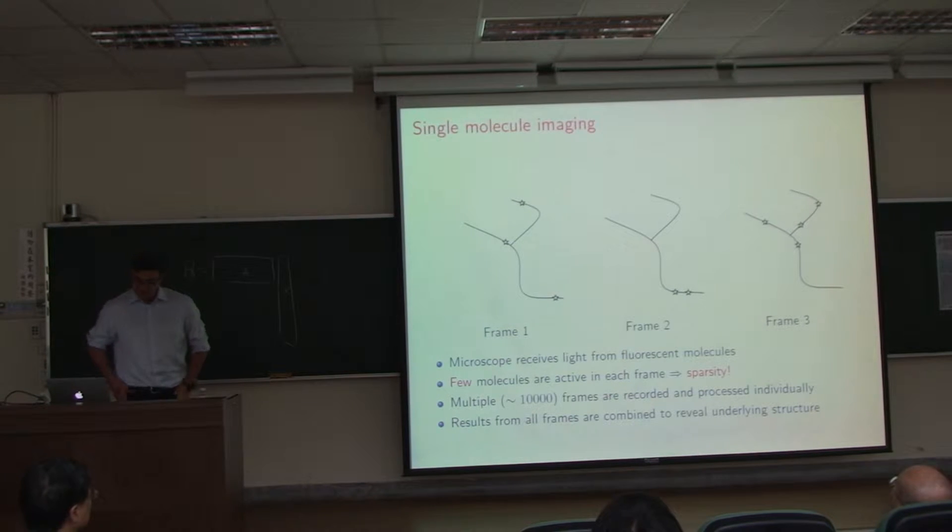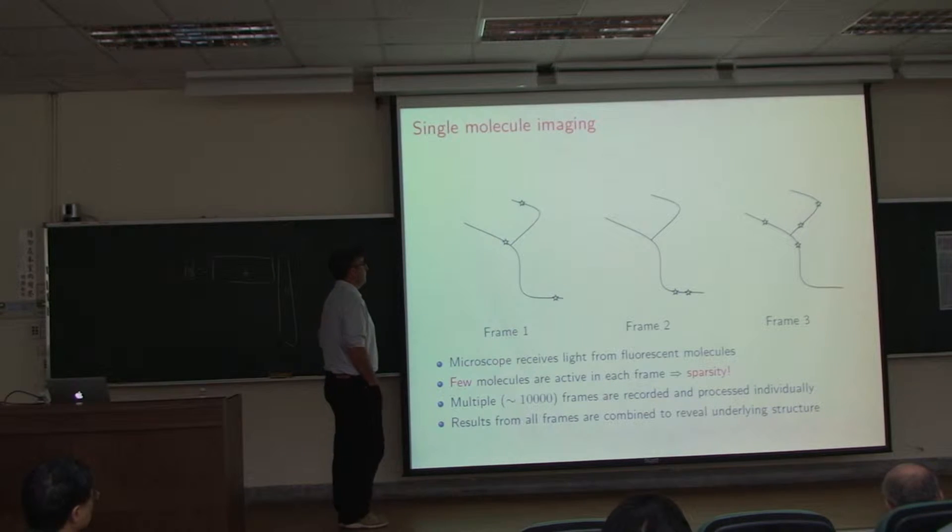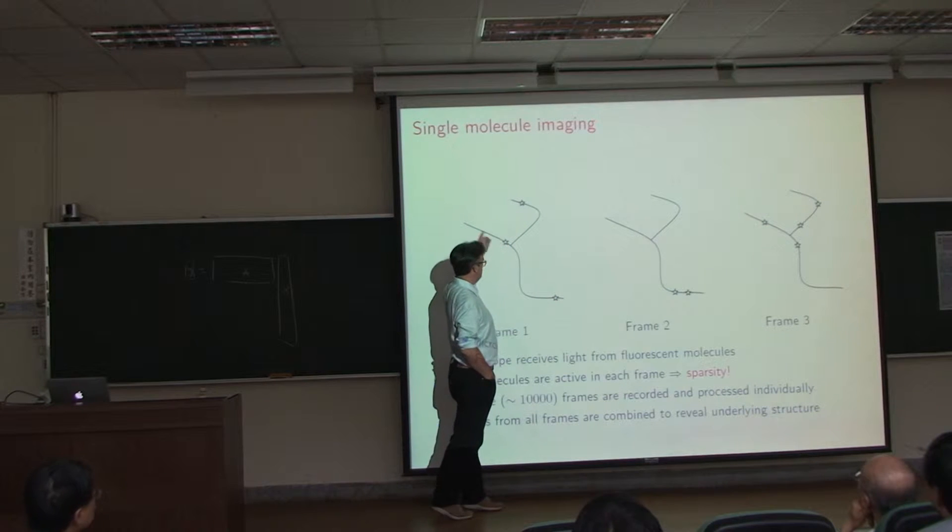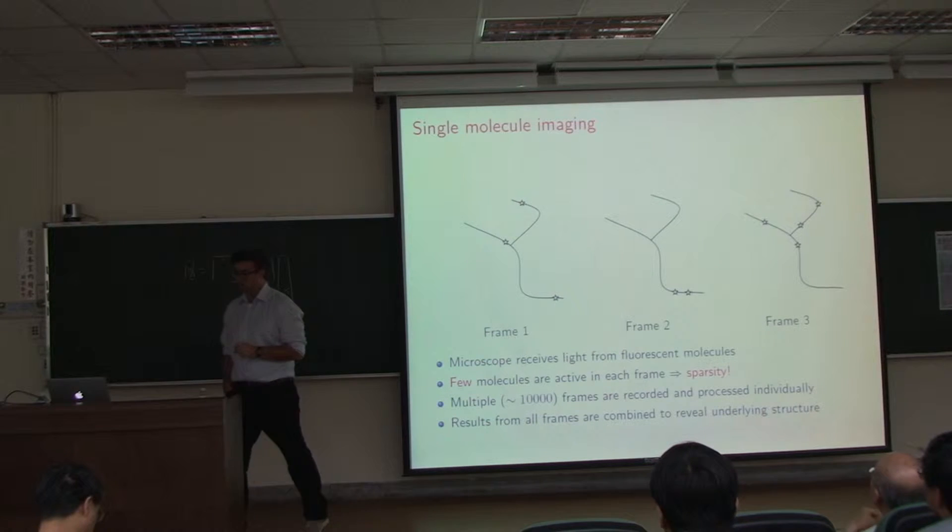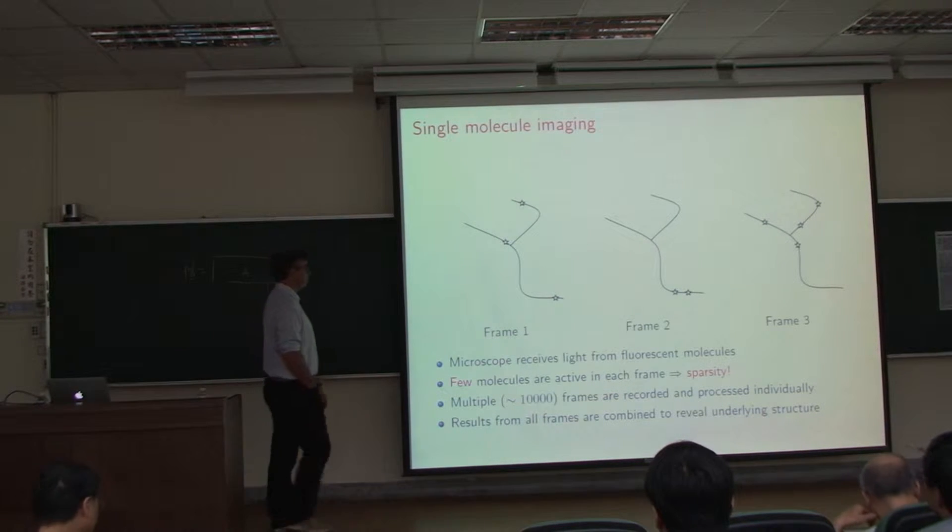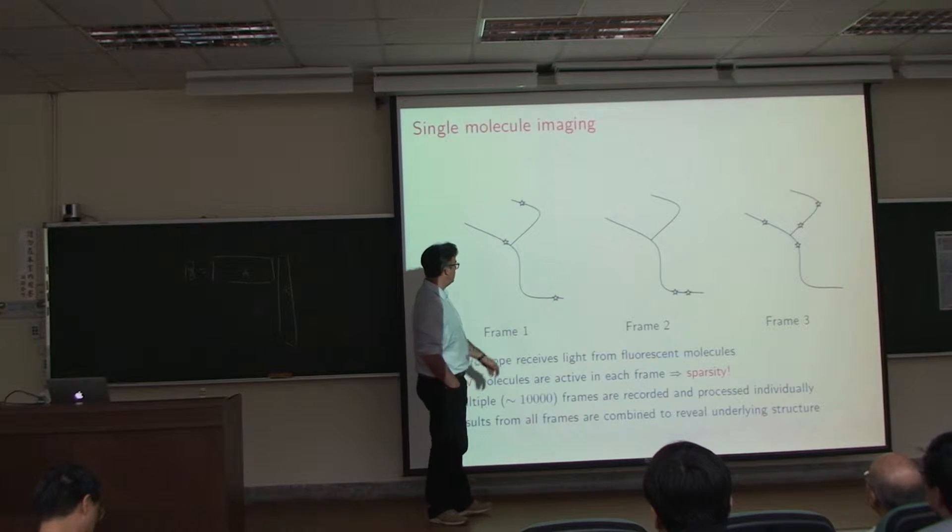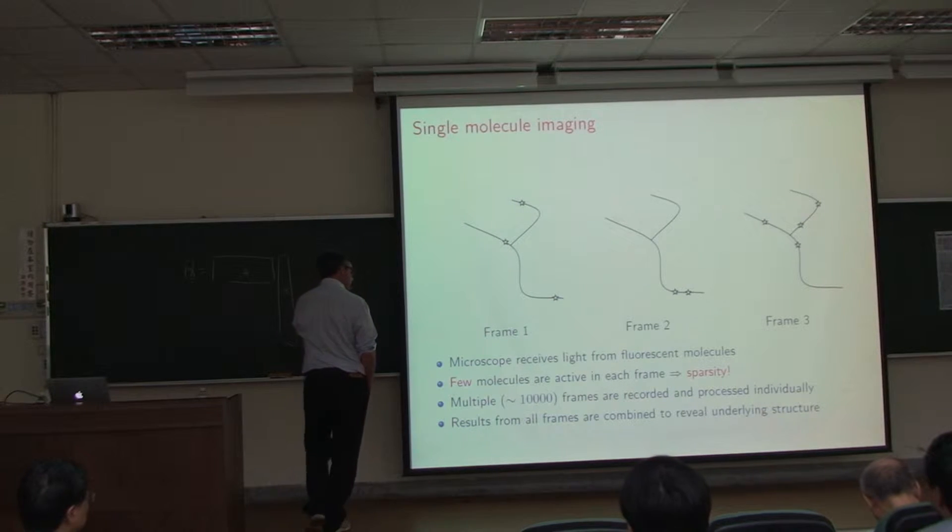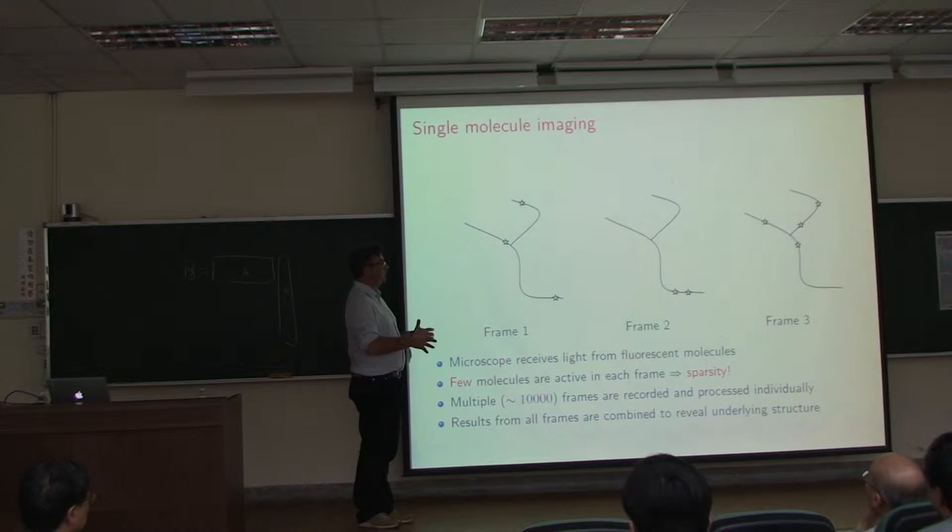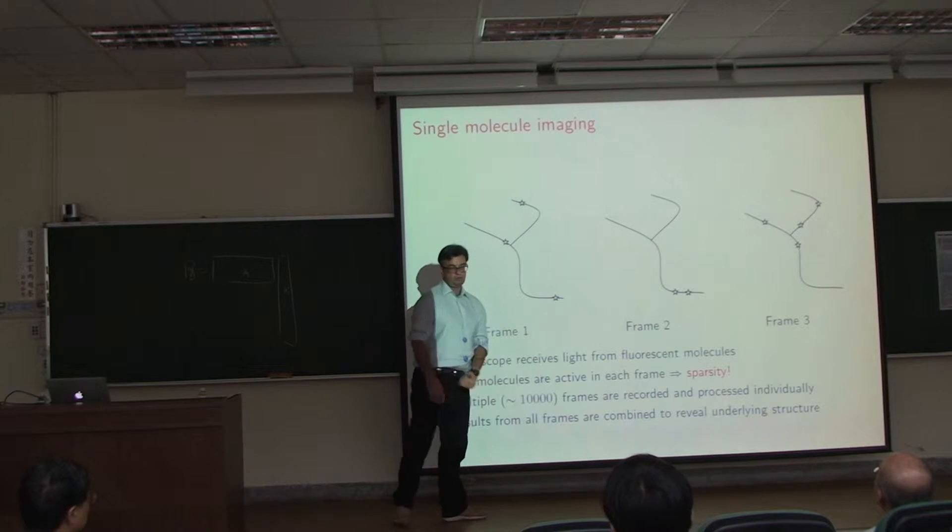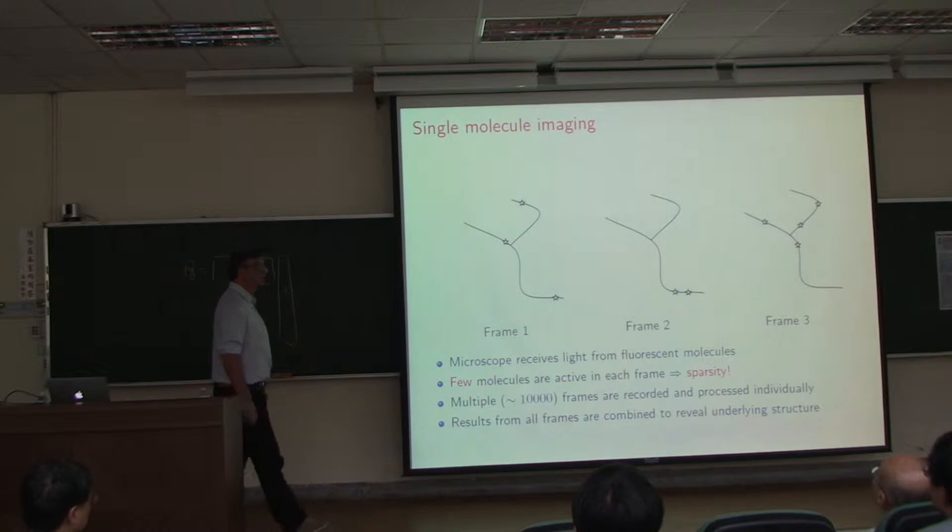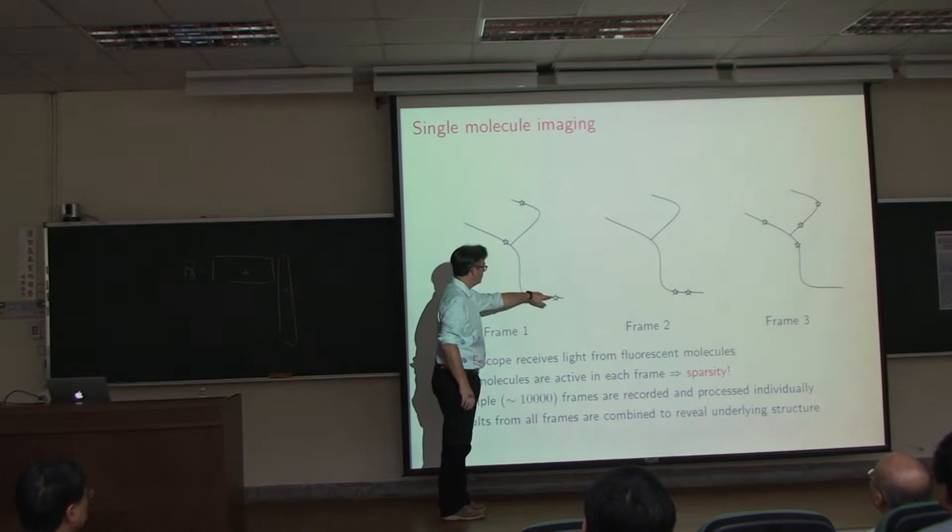This work is motivated by a project I'm working on at Stanford with a group of chemists led by W.E. Moerner. We're trying to image single molecules that organize into filaments, and we would like to image them with as much precision as possible. The microscope receives light from fluorescent molecules. In each image frame, only a few molecules will show up as bright spots. We'll have multiple frames, perhaps 10,000, and from all these frames we would like to recover super-resolved images of all these molecules. This is important for cell imaging, and it's very important to resolve the locations of molecules precisely.